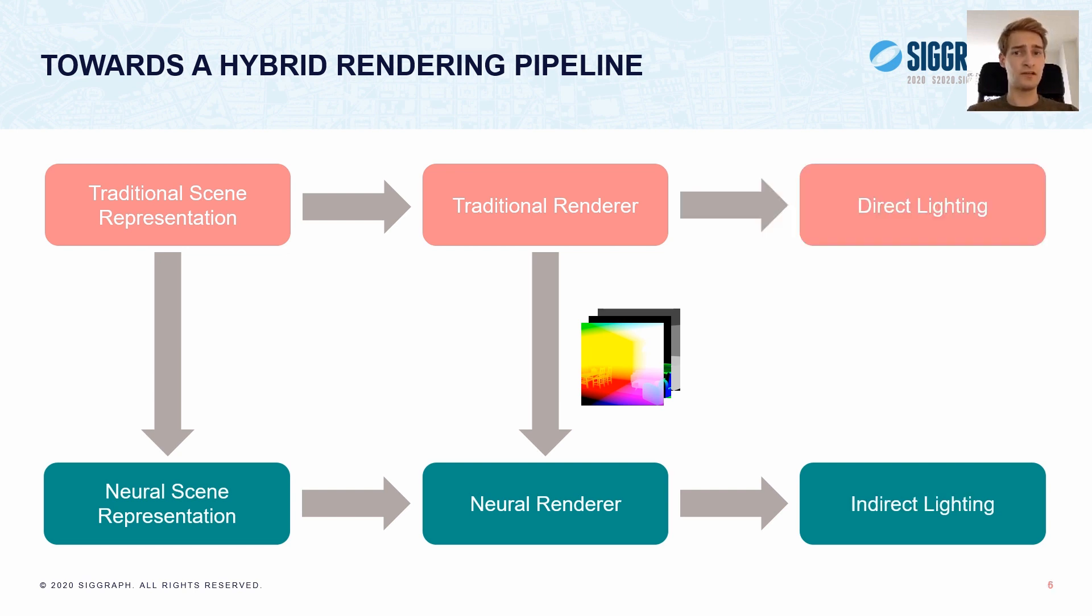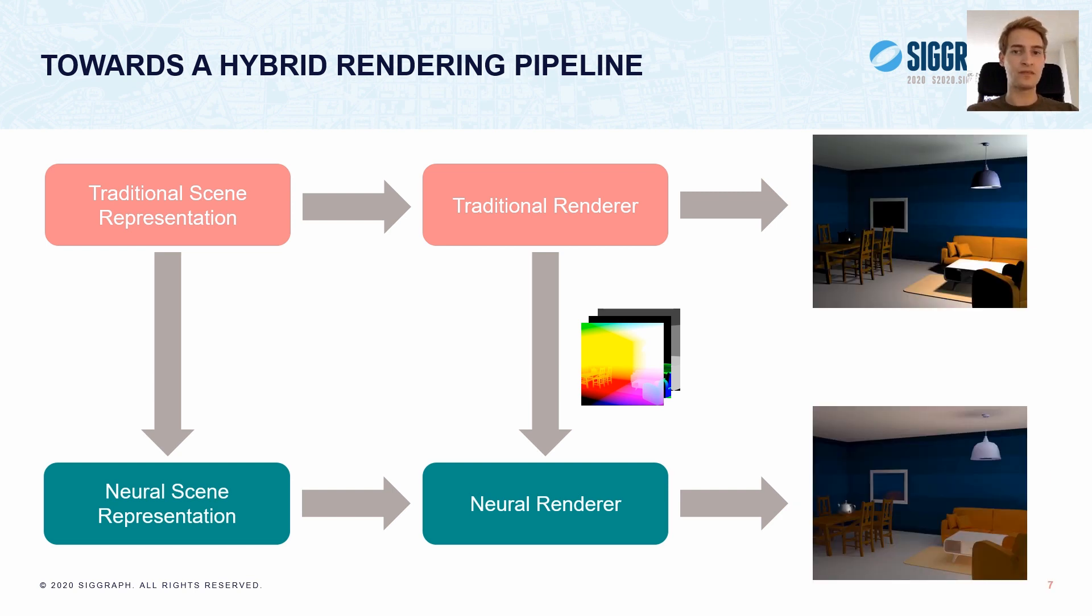The gbuffer and the neural scene representation then complement each other. In fact, we believe a complementary design, where a traditional renderer coexists alongside a neural one, is the most promising approach for the near future. Having the traditional renderer output direct lighting only, and synthesizing only the expensive indirect illumination using the neural renderer, could actually be quite practical, and I'll show a few results towards the end of the talk.